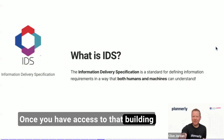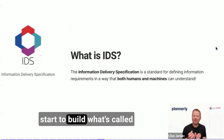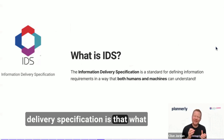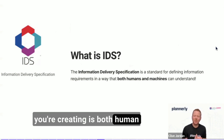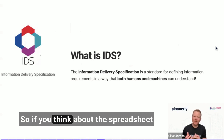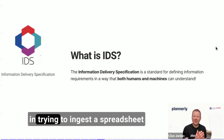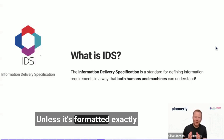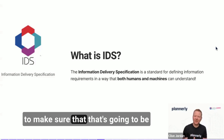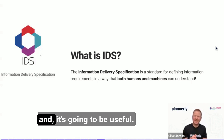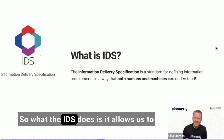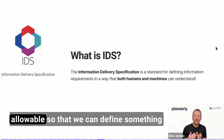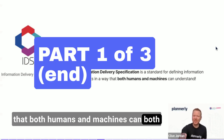Once you have access to the Building Smart Data Dictionary, you can use it to start to build what's called an Information Delivery Specification. The beauty of an IDS is that what you're creating is both human readable and also machine readable. If you think about the spreadsheet example — it can be very flexible, but ingesting a spreadsheet into a piece of software, unless it's formatted exactly as expected, is difficult to make fast, understood, and useful. What the IDS does is allow us to have a structure — a schema of the hierarchy, what's included and what's allowable — so we can define something that both humans and machines can understand.